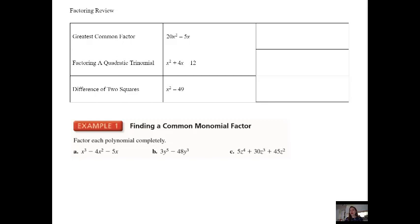Greatest common factor—you're always going to want to first check when you're asked to factor a polynomial to see if there's a greatest common factor. Is there a common factor you can divide out of every term? In our example, 2x squared minus 5x, both 2x squared and 5x have 5 and x in common. We can divide 5 and x out of both terms, and when we do that we are left with 4x minus 1.